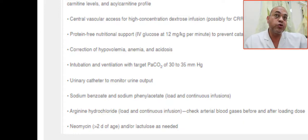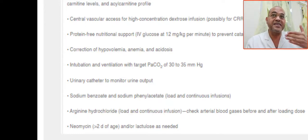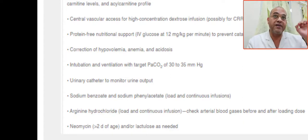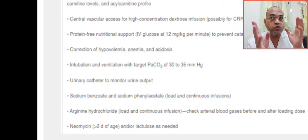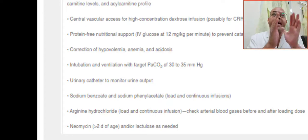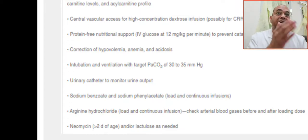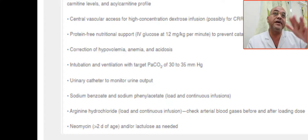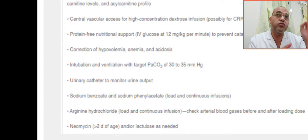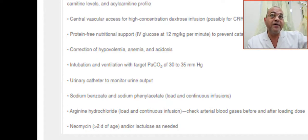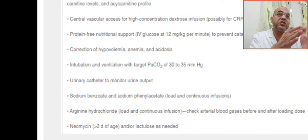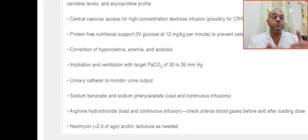Sodium benzoate and sodium phenyl acetate: start with 250 mg/kg as a loading dose over one and a half hours, followed by continuous infusion of 25 mg/kg/day in dextrose 10% water. Arginine 10%: loading dose of 2 ml/kg (0.2 g/kg) diluted in D10 water over one and a half hours, followed by continuous infusion of 2 ml/kg/day. Check arterial blood gas after the loading dose, as acidosis may occur and should be corrected.